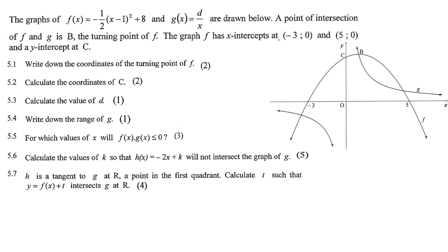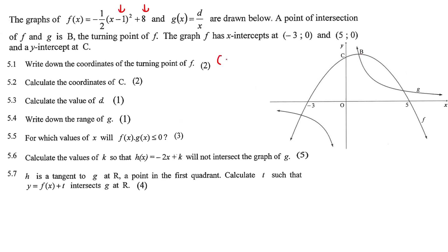The graph of f has x-intercepts, as shown. Write down the coordinates of the turning point. Since the equation is given in turning point form, you can read the coordinates straight away: the turning point is (1, 8). So b is (1, 8).